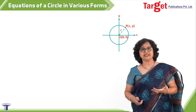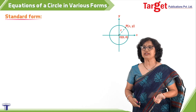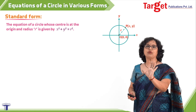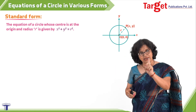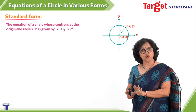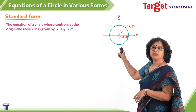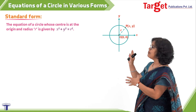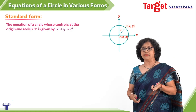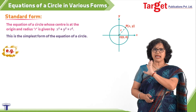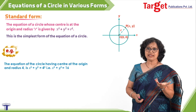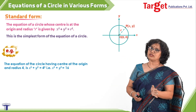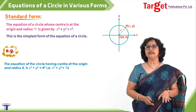We describe the circle in x and y to get the equation. Using the distance formula: distance OP = r, which gives √((x−0)² + (y−0)²) = r. Squaring both sides: x² + y² = r². This is the simplest standard form — the equation of a circle with center at the origin and radius r. For example, a circle with radius 4 gives x² + y² = 16.